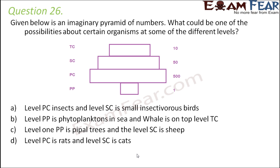Question number 26. Given below is an imaginary pyramid of numbers — what could be one of the possibilities about certain organisms at some of the different levels? So here we are given a pyramid of numbers. PP represents primary producer, then primary consumer, secondary consumer and tertiary consumer. We see that there is only one primary producer and 500 primary consumers depend upon this one primary producer. Then 50 secondary consumers depend on 500 primary consumers, and 10 tertiary consumers depend on the 50 secondary consumers.